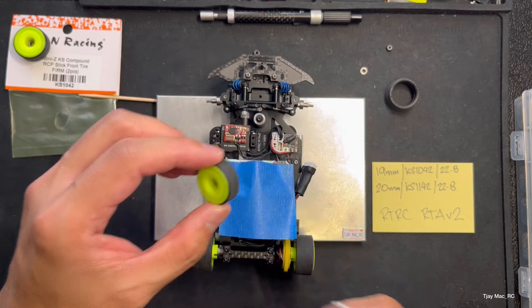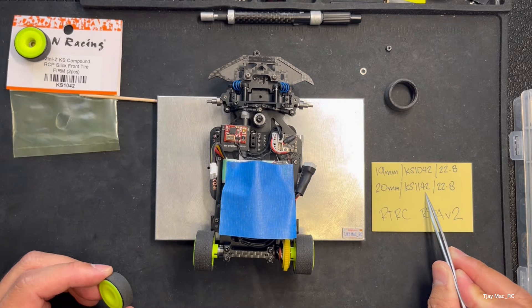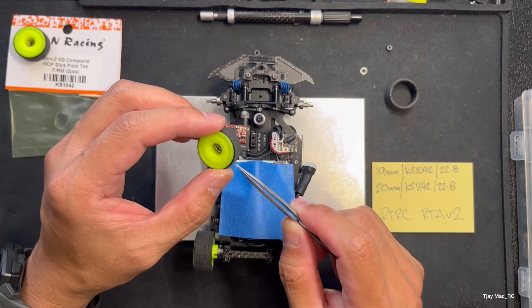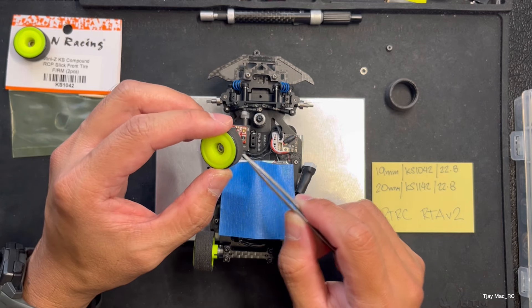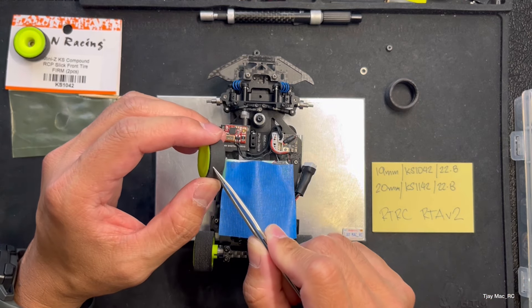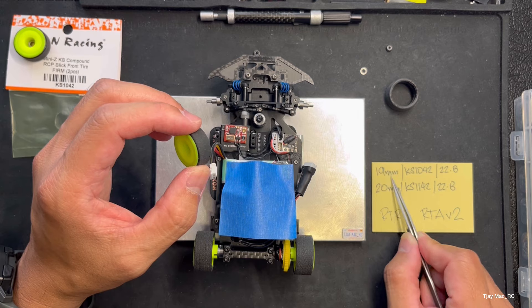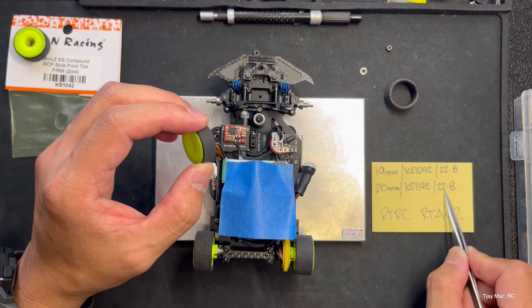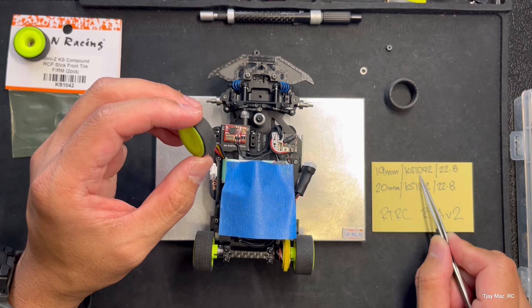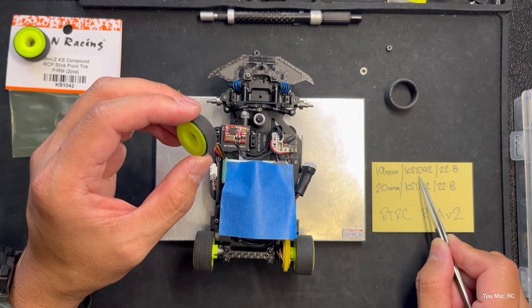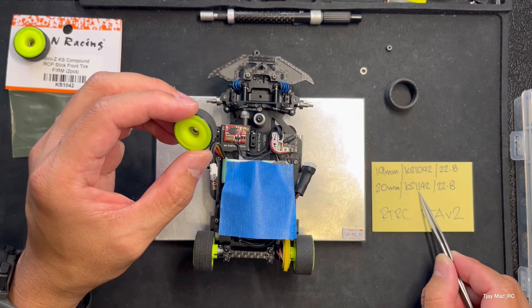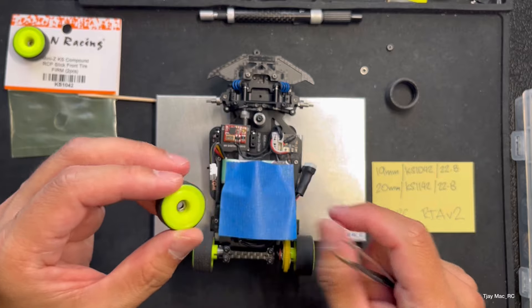I would suggest to run the 20 millimeter KS 1142 without glue first, and then if you find you still have too much steering, then glue the sidewall. Now if this is the tire you chose and you understeer, then go to 19 millimeter KS 1042. They're both the same size when you scuff them, but I know these two are both firm, but this has more sidewall, this is low profile so the sidewall is skinnier, less flex.